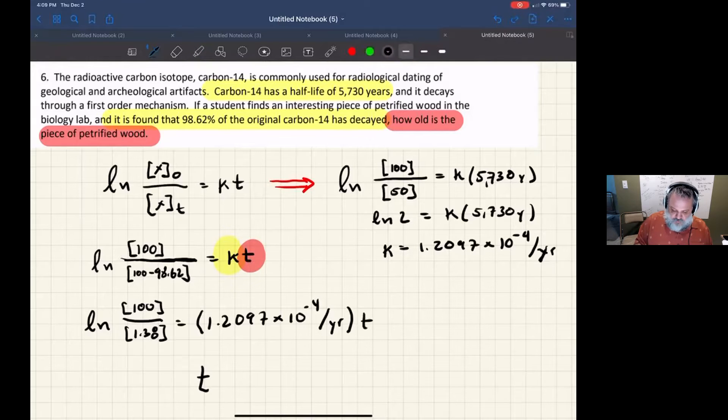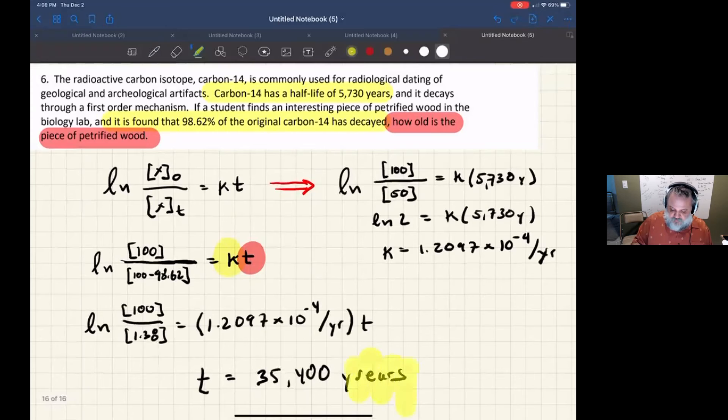When I run this through my calculator, t equals 35,400 years. That is the final answer.